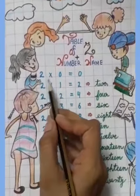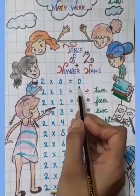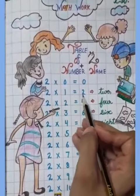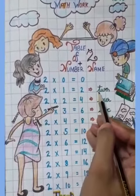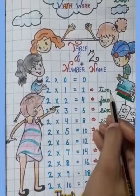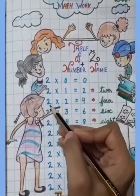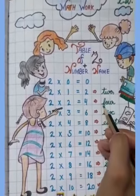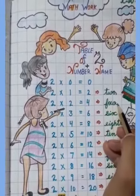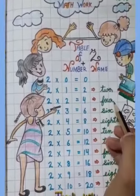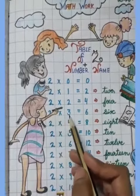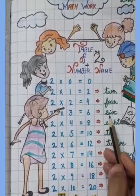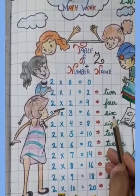2 zeros are 0. 2 ones are 2. 2 twos are 4, f-o-u-r, 4. 2 threes are 6, s-i-x, 6.